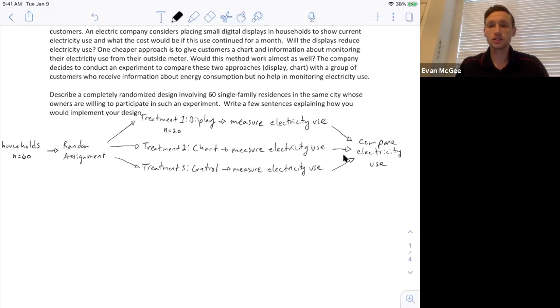So this is essentially the visual of the experiment and just one thing about the control group is the reason we have to have the control group is to provide a baseline to compare the chart and the display treatments against. If we didn't have the control group we wouldn't be able to tell whether the homes with digital displays or charts use less electricity than homes that didn't have the aids like this. So the control group gives us more information about the treatments.